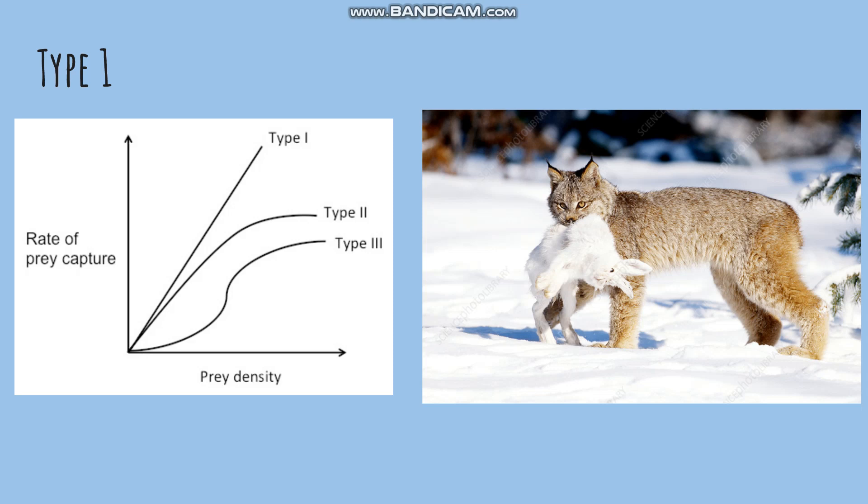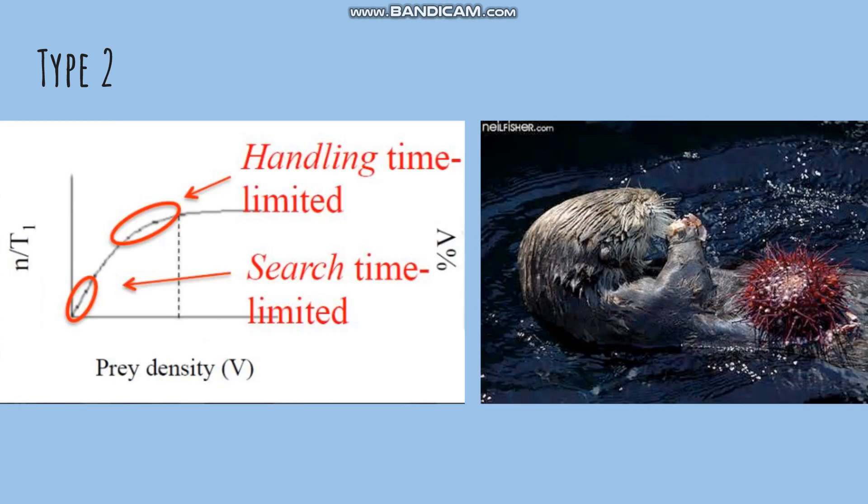An example of Type 1 is the lynx and hare: increasing the number of hares in an environment is directly proportional to the increase in the number of lynx. For Type 2, at first the feeding rate is slow, limited by search time.